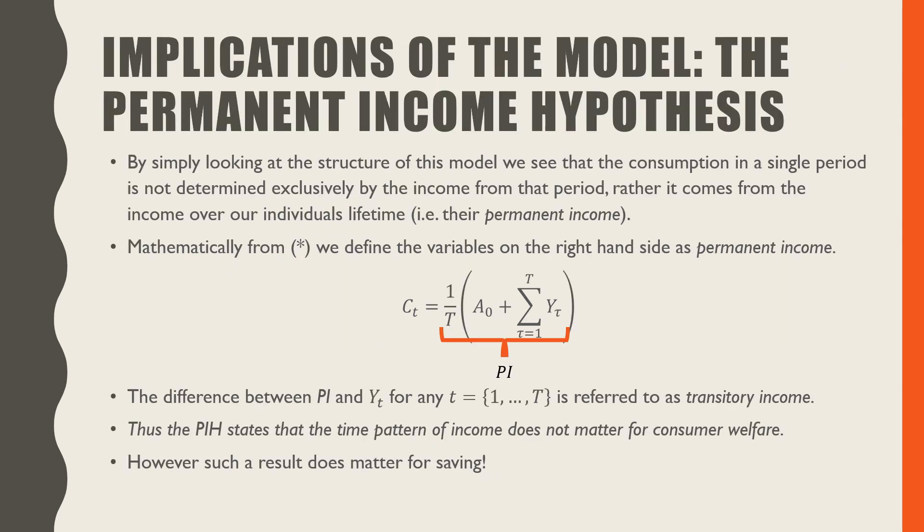By simply looking at the structure of the model, we see that consumption in a single period is not determined exclusively by the income in that period. Rather, it's the income over an individual's lifetime, i.e. their permanent income. Mathematically, from this equation from our previous slide, we define variables on the right-hand side of that equation as permanent income. This shows the optimal C_t as consumption is determined by this permanent income in that period.